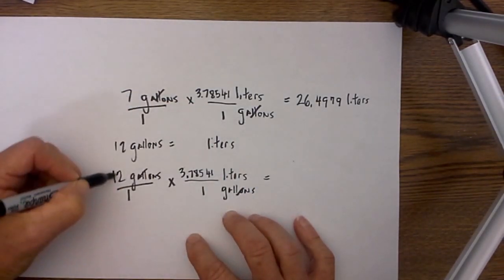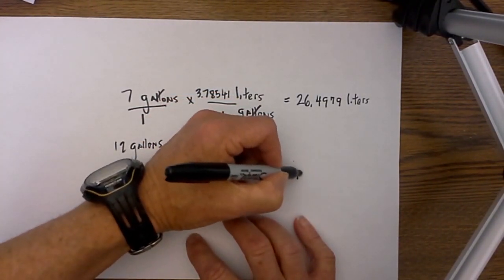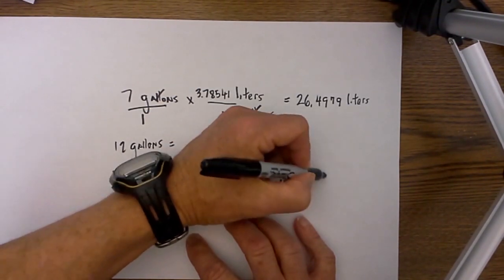Gallons cancel, multiply straight across, and you are left with 45.4249 liters.